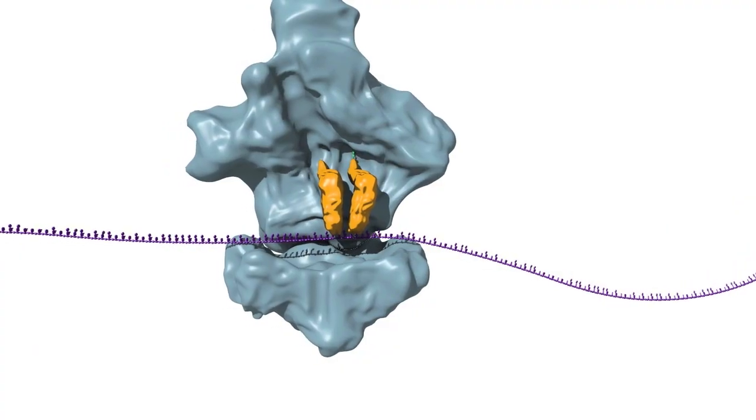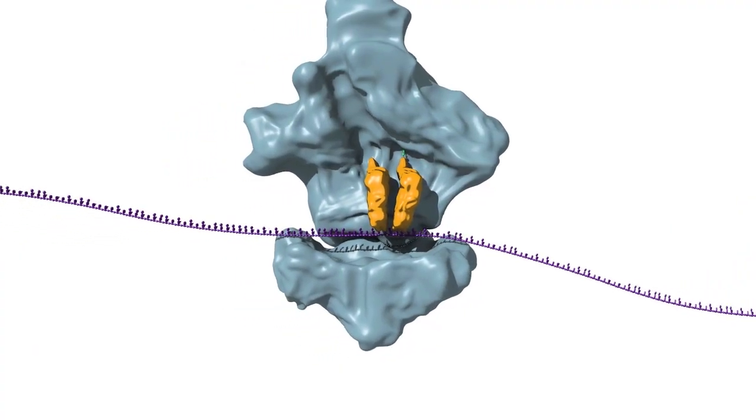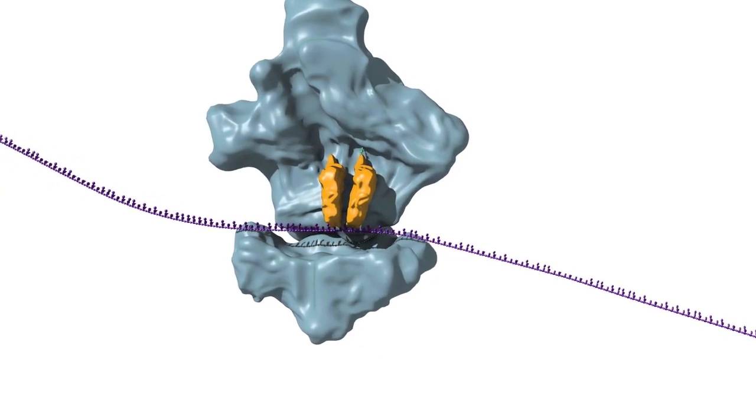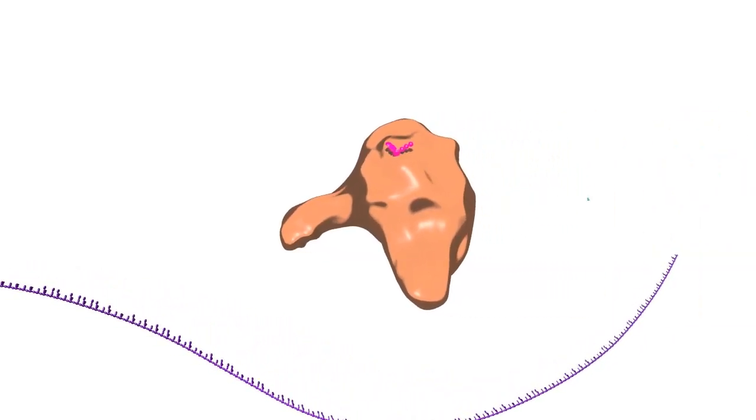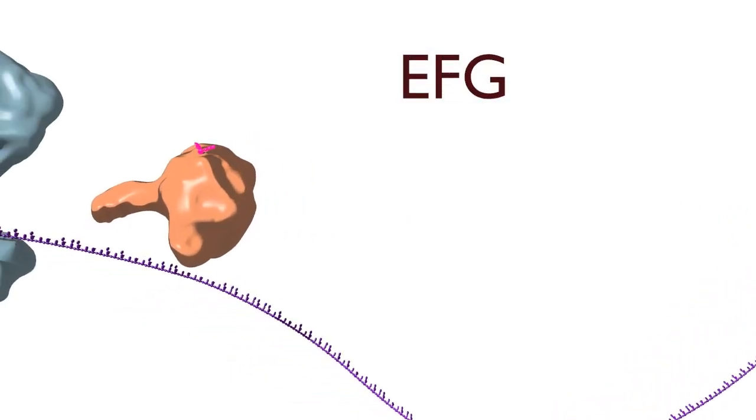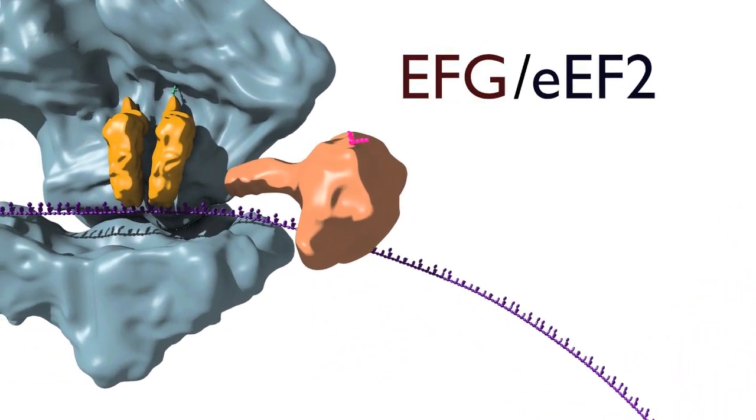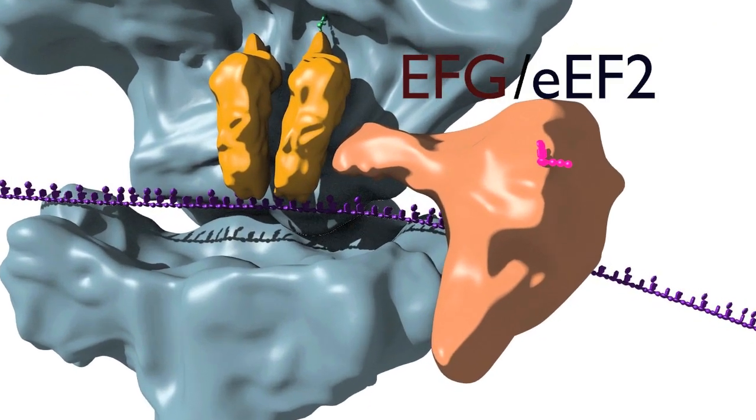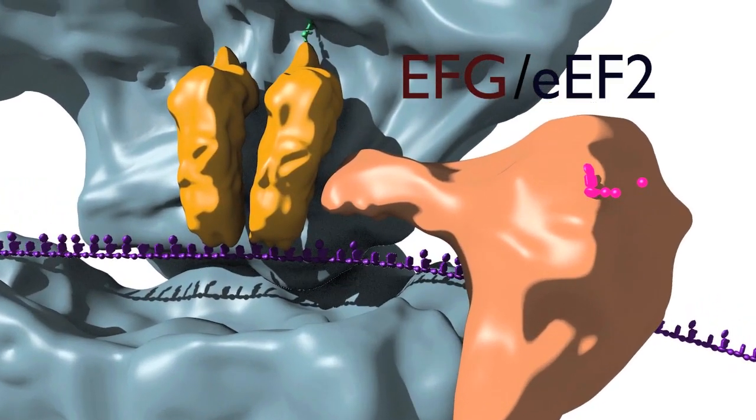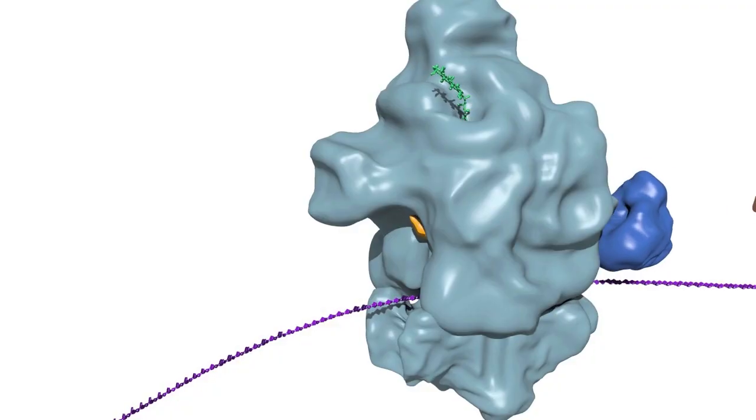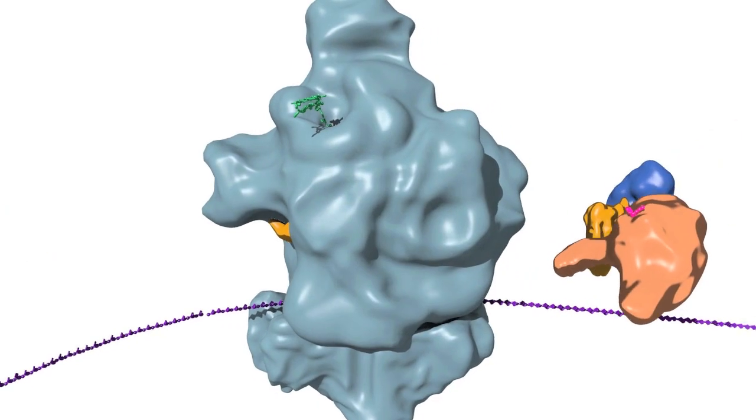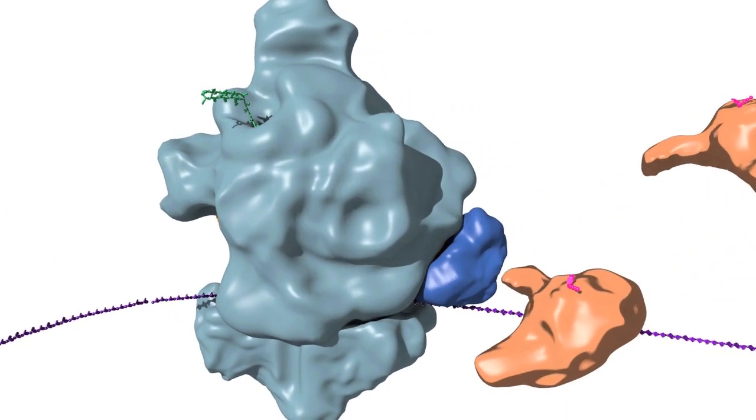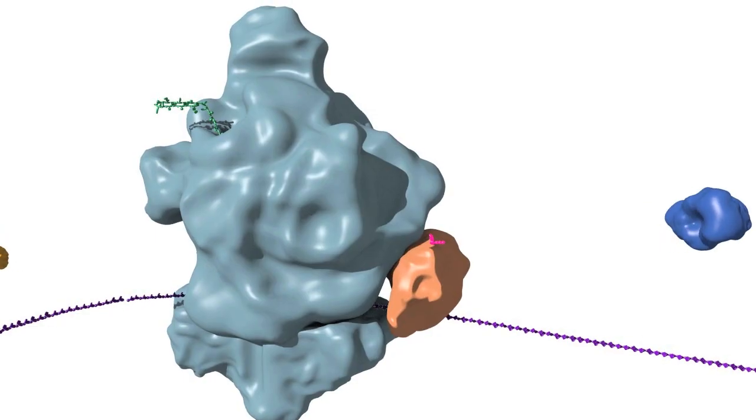This whole mRNA tRNA complex must now be repositioned in the ribosome to open up the A site for the next incoming aminoacyl tRNA. This translocation step is catalyzed by another translational GTPase, EF-G in bacteria and eEF2 in eukaryotes. The GTPase couples the chemical energy of GTP hydrolysis to mechanical motion. These core events of elongation—tRNA selection, peptide bond formation and translocation—happen iteratively until the ribosome reaches a codon in the A site that signals stop.